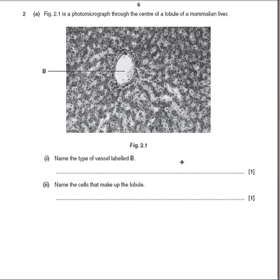Question 2A. Figure 2.1 is a photomicrograph through the centre of a lobule of a mammalian liver. We notice the label B right over here. Name the type of vessel labelled B.